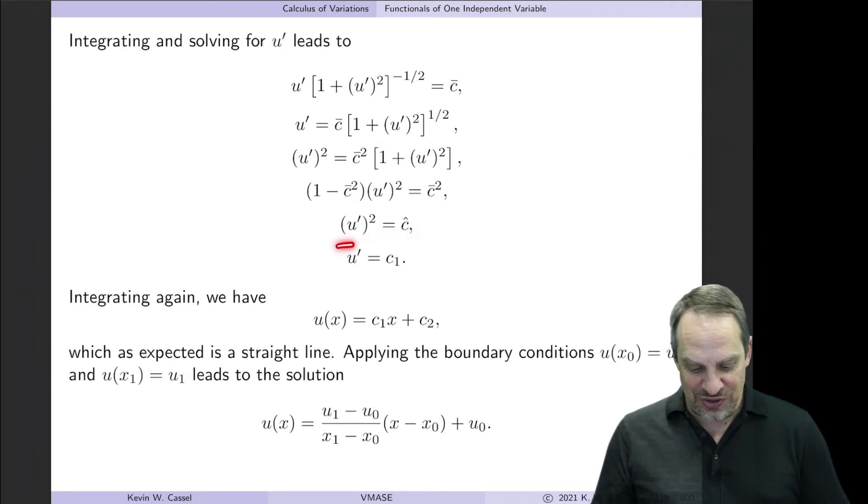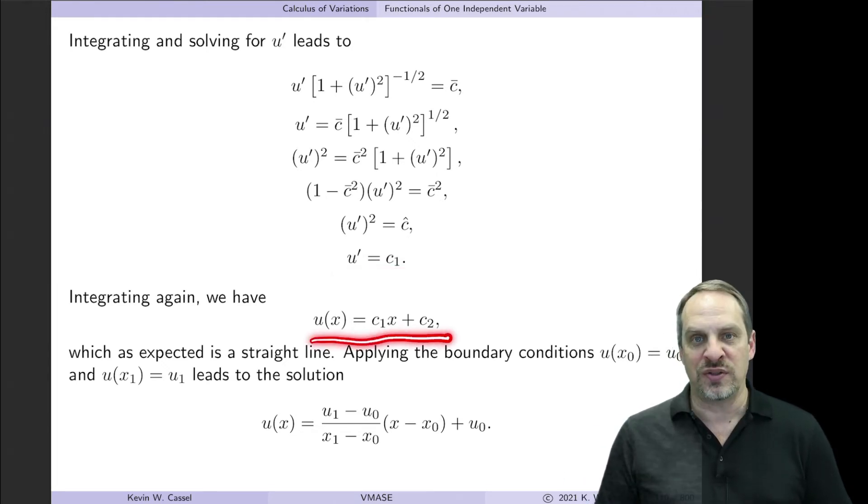Well, this is just a constant. Divide both sides. I have u' squared is equal to another constant, call it ĉ. I can take the square root of both sides to get, indeed, another constant, call it c1. So u' is c1. All of this is just algebra to solve for u prime as a function of x. So if u' is now a constant, I integrate again once, and that gives me the straight line c1x plus c2. So indeed, the shortest distance between two points is a straight line.